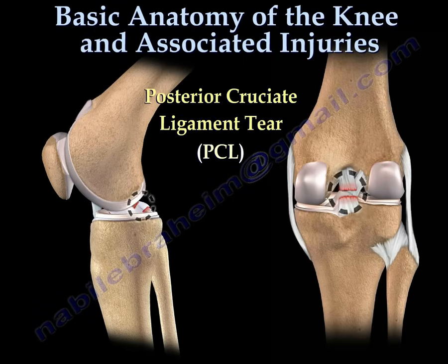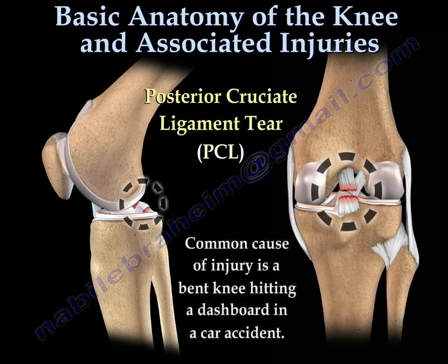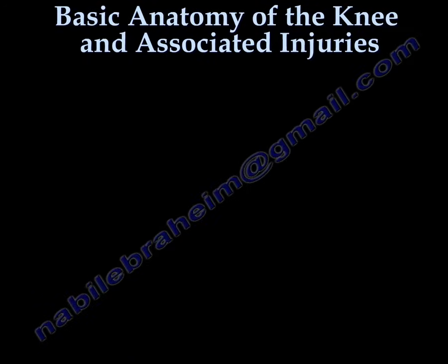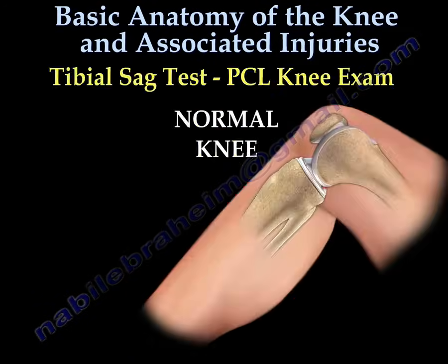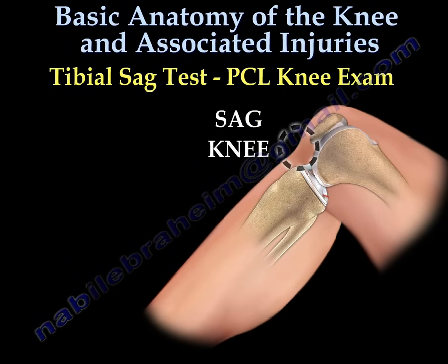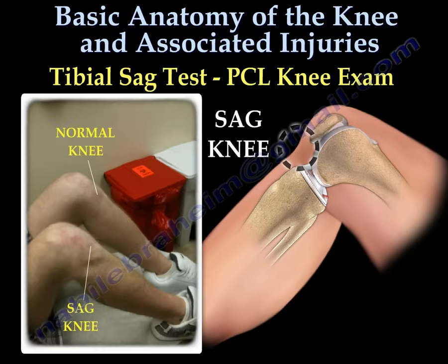When the posterior cruciate ligament ruptures, posterior translation of the tibia will occur. The tibial sag test is used to assess a tear of the posterior cruciate ligament. Both knees are flexed at 90 degrees and the knees are viewed from the side to compare positions of the anterior tibia.